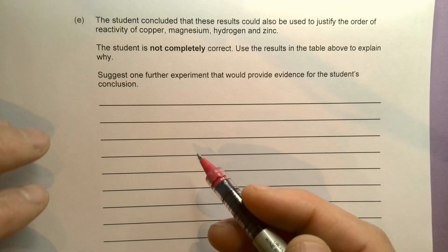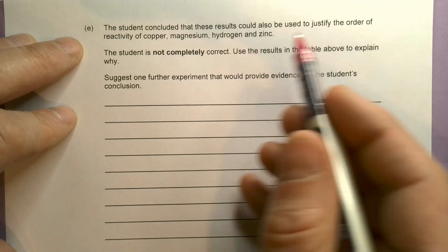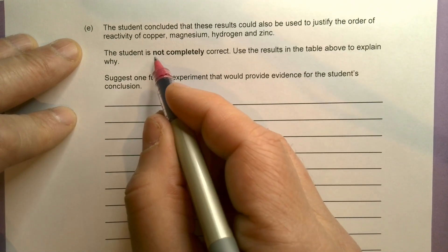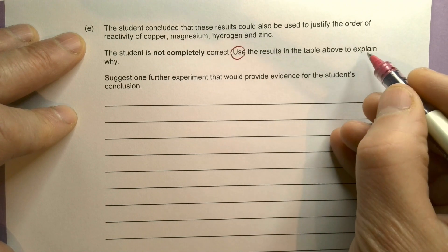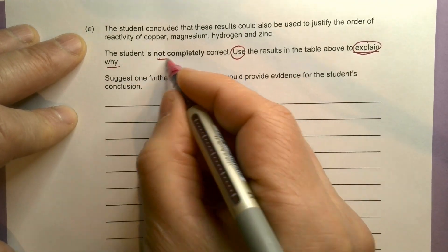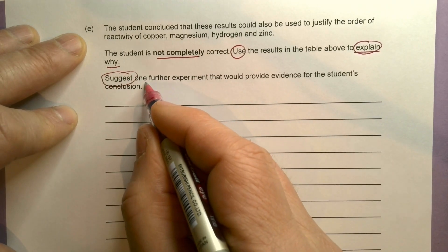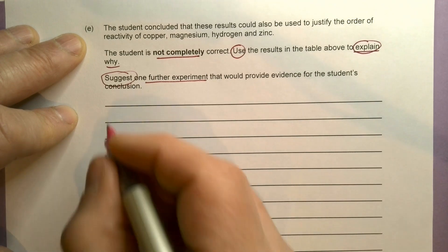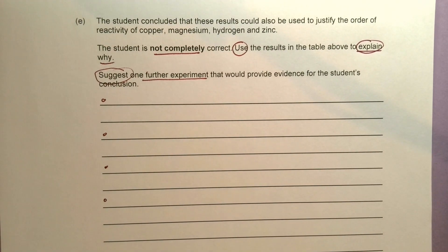Okay, the student concluded that these results could also be used to justify the order of reactivity of copper, magnesium, hydrogen, and zinc. The student is not completely correct. Use the results in the table to explain why and suggest one further experiment that would provide evidence for the student's conclusions. It's worth four marks, so let's have a look at the table first.